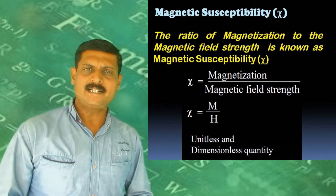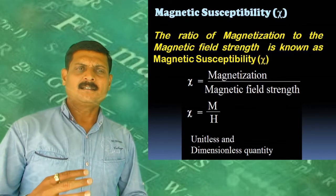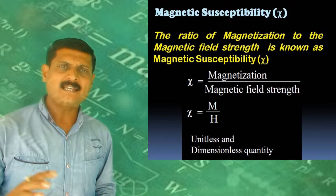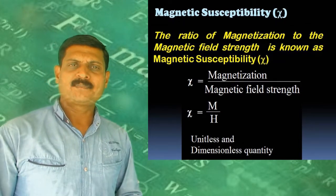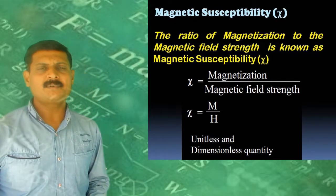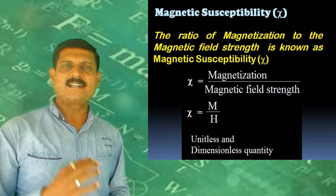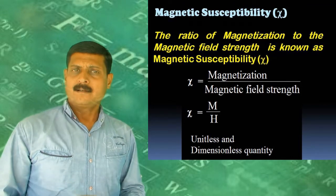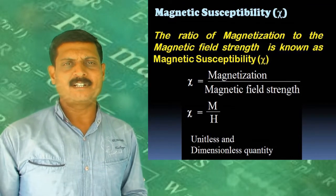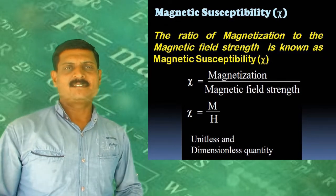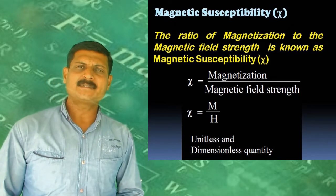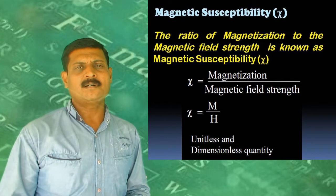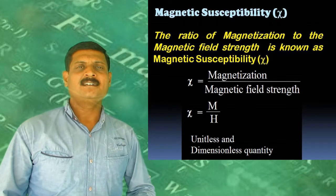Magnetic susceptibility, denoted by K (or χ), is the ratio of magnetization to magnetic field strength: K = M/H. It is a dimensionless and unitless quantity since both M and H have the same units. For diamagnetic substances, magnetic susceptibility is negative and small. For paramagnetic substances, it is positive and small. For ferromagnetic materials, it is positive and relatively large.